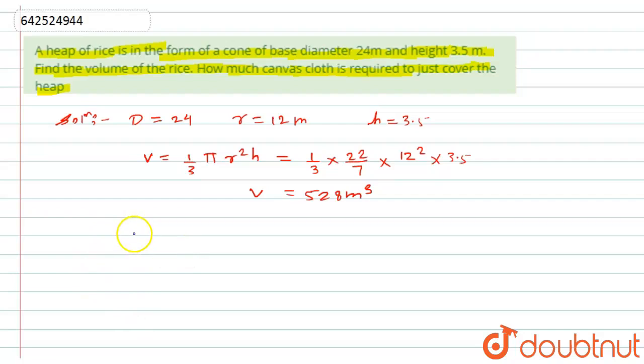If you look at this, the canvas cover will cover only the curved surface area of the cone. So we have to calculate the curved surface area of the cone. For that, we require the length of the slant height of the cone, so first we will calculate the slant height.